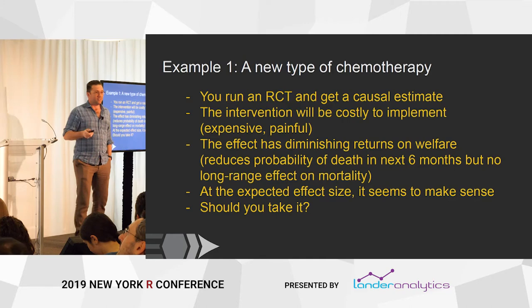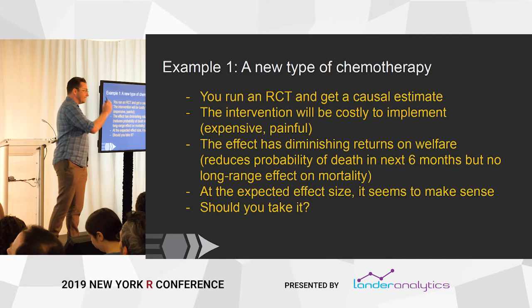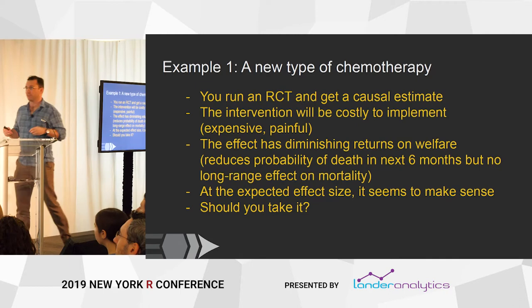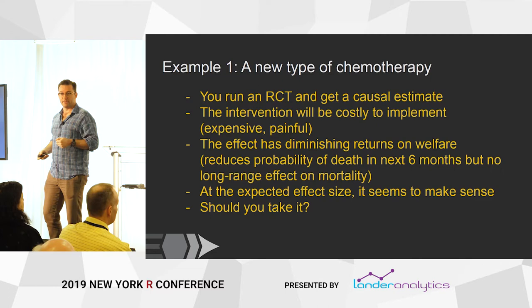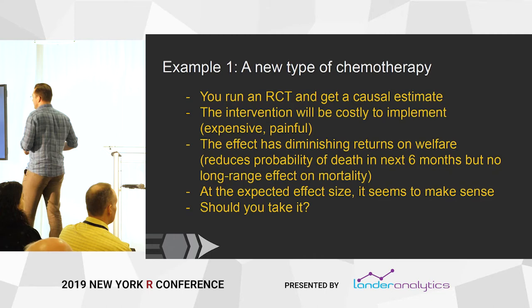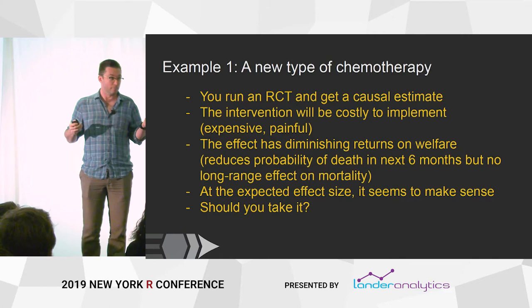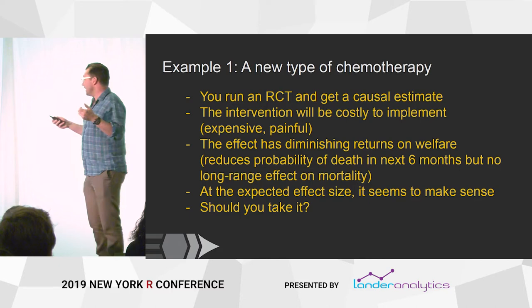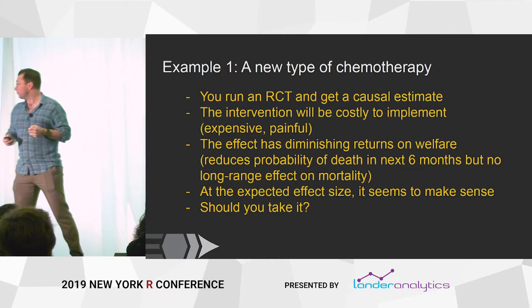Let's use an example. I'm not a health person, but we're going to look at a new type of chemotherapy. Let's say there's a definitely terminal cancer — it's definitely going to kill you — and there's some pill I can give someone. I'll run a randomized control trial and see how much longer the treatment group lives than the control group, getting a causal estimate. There are a couple of wrinkles: it's costly to implement, chemotherapy is horrible, expensive, and it hurts the person getting it, so there's a cost to its implementation.